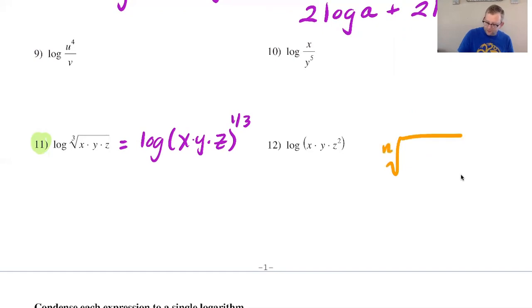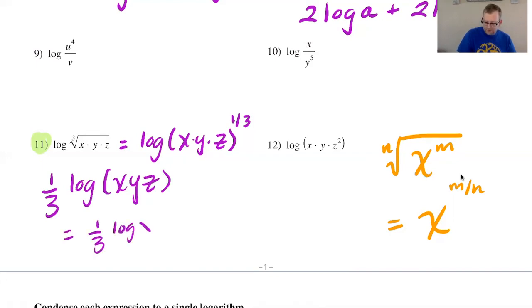Since all of x, y, and z are all raised to the first power then I can rewrite this cubed root as x y z to the one third. Now I will bring this one third down in front of the log and then one third log x plus one third log y plus one third log z and there you go that's as expanded as we want it.